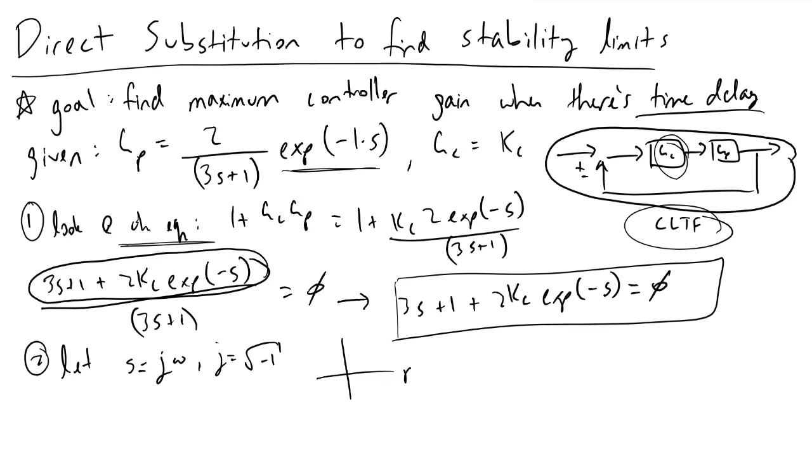If we go back to the real and imaginary plane, our system is on the verge of instability when our poles exist on the imaginary axis itself, and this is when s equals jω.